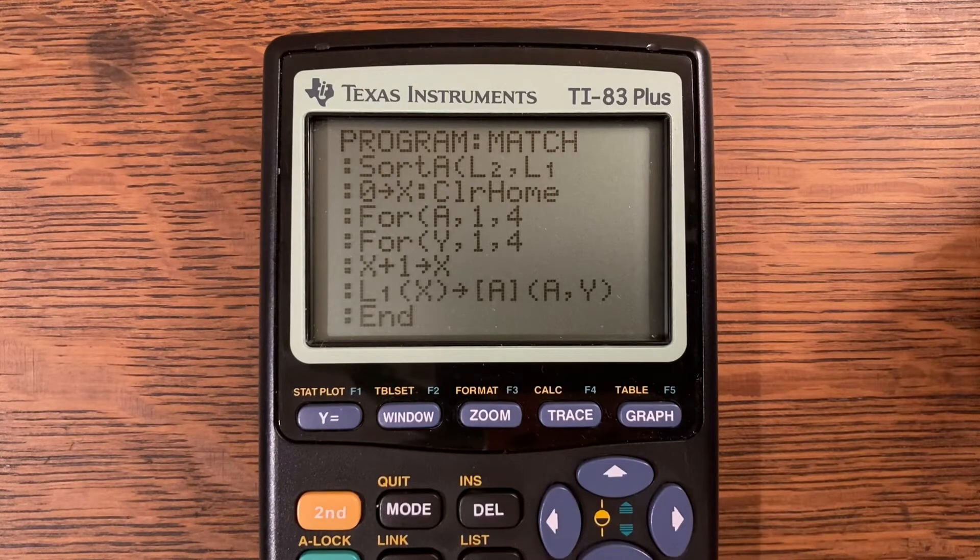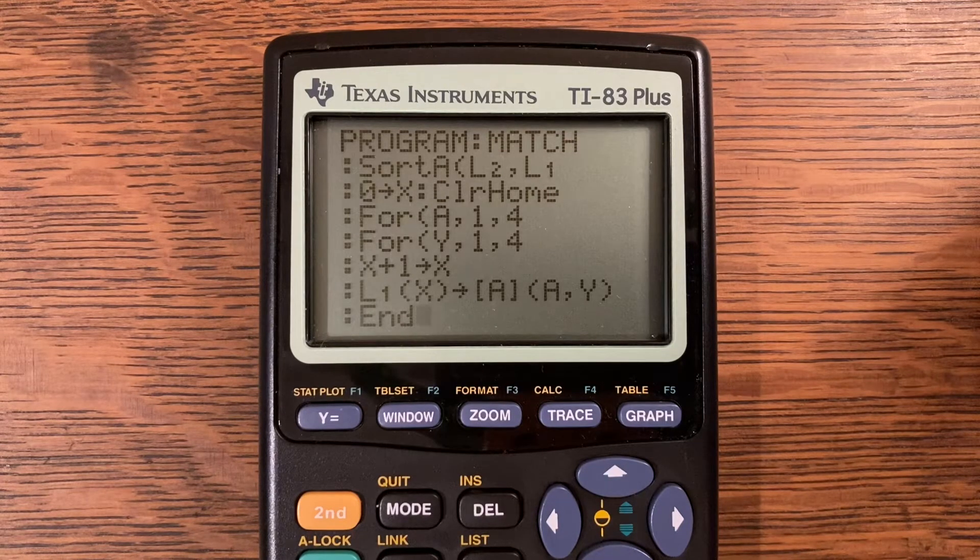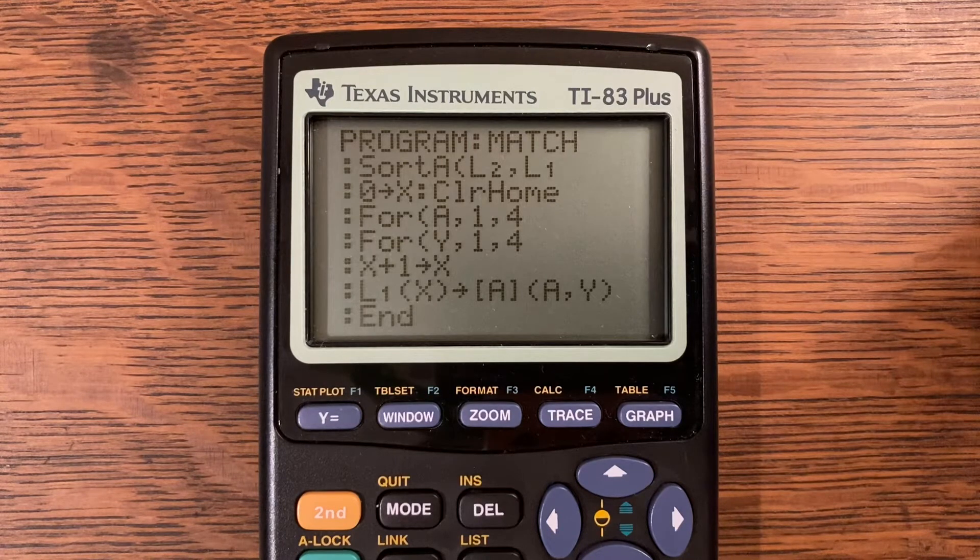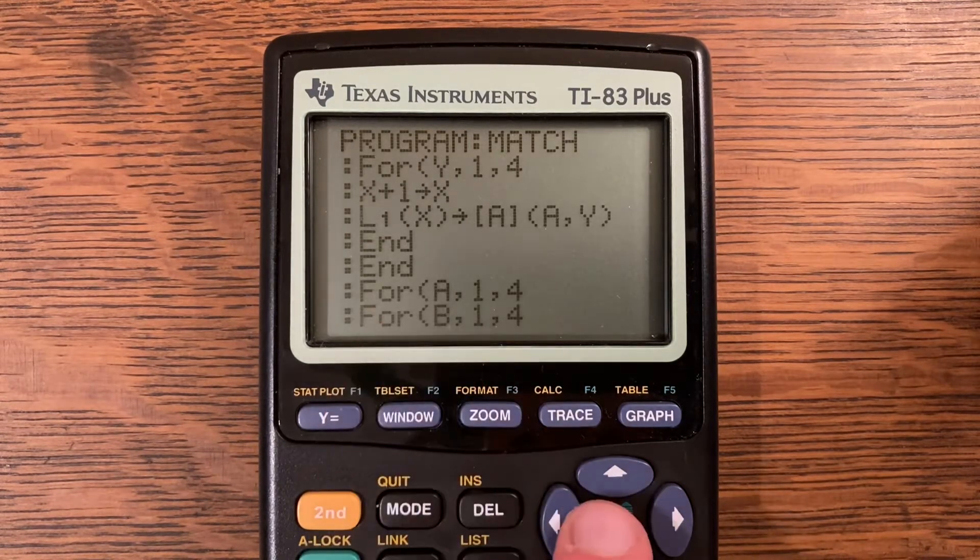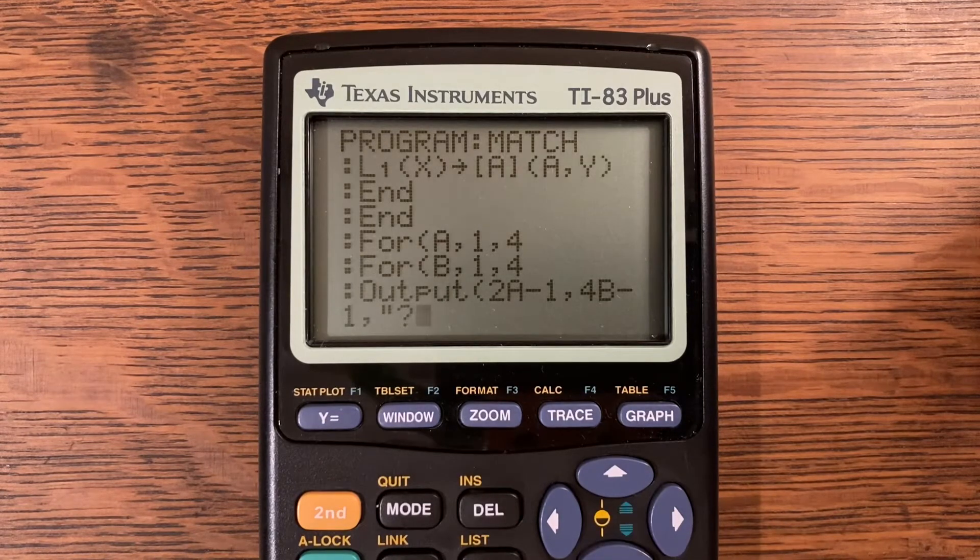For A comma 1 comma 4, For Y comma 1 comma 4, X plus 1 store into X, L1 at X store into matrix A at A comma Y, and End. There's two Ends there.